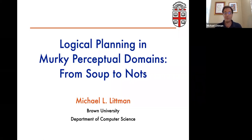But regardless, it's really cool to be here and I hope I can at least spur some interesting discussions. My talk is about logical planning in murky perceptual domains from soup to knots. Soup to nuts is an expression in English which means everything from beginning to end, but here I'm referring to the soup of perception to the knots, the logical knots that we can use when trying to plan large numbers of steps into a domain.